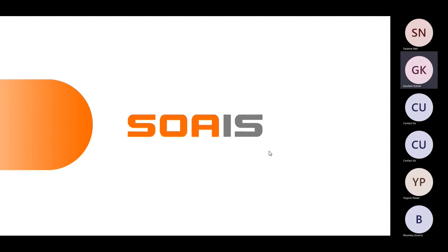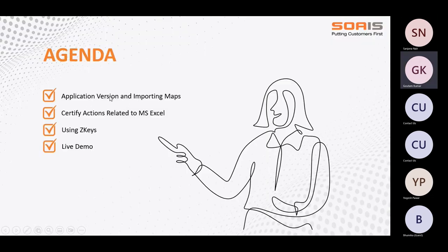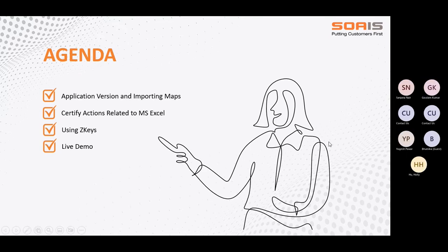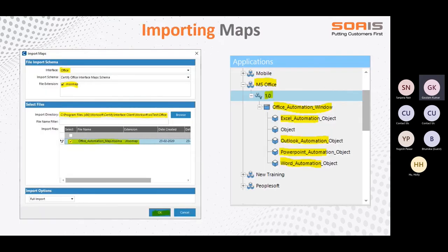So this is the agenda for today's webinar. First, we will see what an application version is and how to create it, and how we import maps. After that, we will talk about the Certify actions — what actions are available in Certify that we can use with MS Excel. Format cell is one action, selecting a range of cells is another. Then we'll cover jet keys — what they are and how we can use them in Excel. Finally there will be a real-time demo. Let's start by looking at importing maps.